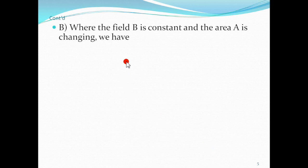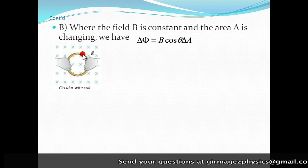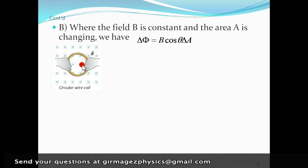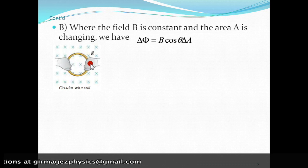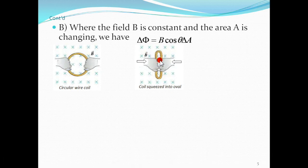The other possibility is when B is constant and the area is changing. When B is constant and area is changing, the B cos theta comes out and delta A will be there to represent the change of area. In this case, look at this one. There is a magnetic field into the page and the area is changing.